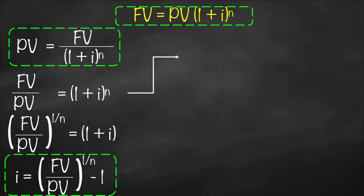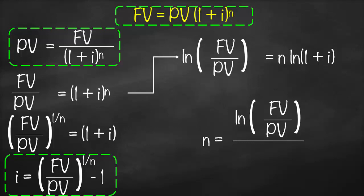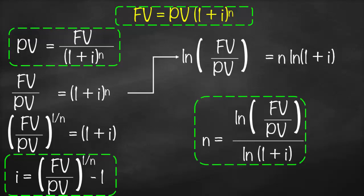Our fourth formula solves for n. Starting from future value divided by present value equals (1 plus i) to the power n, we apply the natural log (ln) to both sides to bring n down. This gives: ln(FV/PV) = n × ln(1 plus i). Dividing both sides by ln(1 plus i), our n equals ln(future value divided by present value) divided by ln(1 plus i).